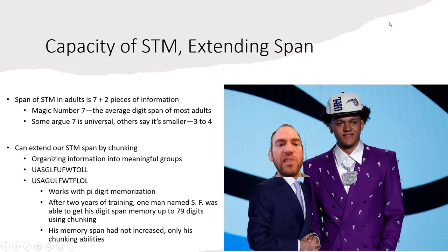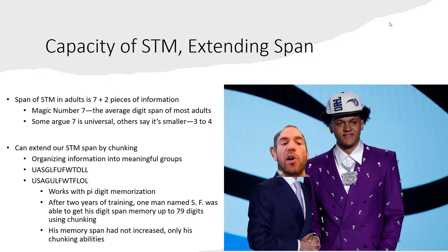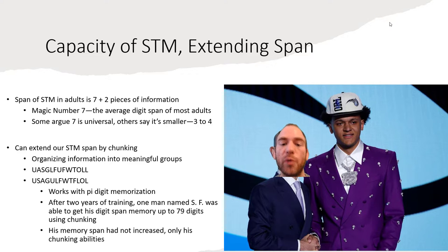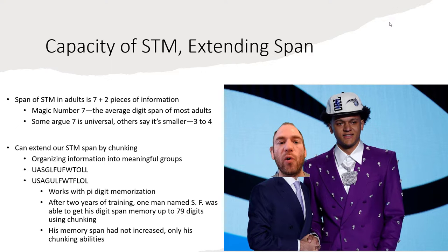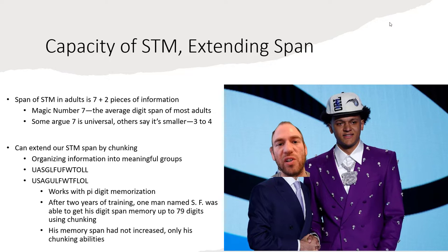The span of short-term memory in adults is seven plus or minus two pieces of information — researchers call this the magic number seven, the average digit span. Some argue seven is universal; others say it's smaller, around three to four. This is likely why telephone numbers without area codes are seven digits — we can temporarily hold them in short-term memory for a brief period.